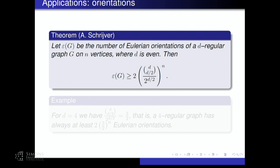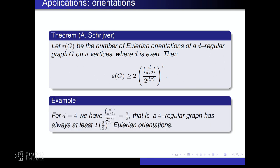The first theorem I would like to show is the theorem of Lex Schreiber. So let G be a d-regular graph on N vertices where D is even. We would like to count the number of Eulerian orientations — that is, orientations where the in-degree and out-degree are both D/2. The theorem states that the number of Eulerian orientations is at least 2 times (D choose D/2 divided by 2^(D/2))^N.